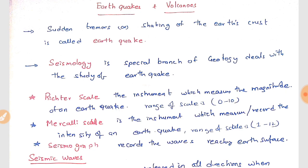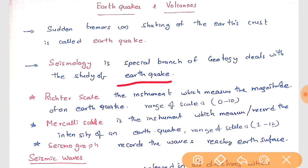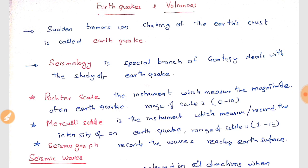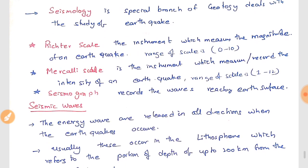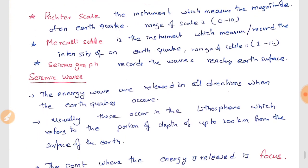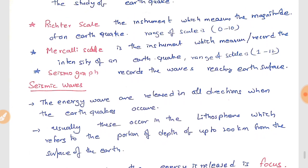What are earthquakes? Sudden tremors or shaking of the earth's crust is called an earthquake. Seismology is a special branch of geology which deals with the study of earthquakes. There are two scales useful for the measure of intensity and magnitude of the earthquake.